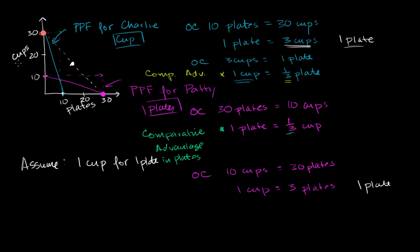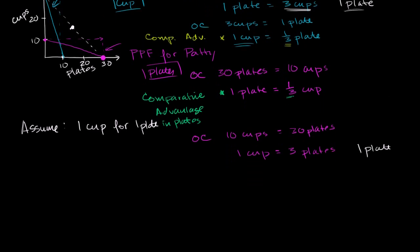In fact, we don't even know what their inputs are. It might be that Charlie doesn't have an absolute advantage — maybe he needs 100 people to produce his 30 cups while Patty can produce 10 cups with one person, so Patty would actually have the absolute advantage. To make everything clear, let's do a scenario where Charlie improved his productivity so that he has the absolute advantage in both products, and still show that as long as they have different comparative advantages, it still makes sense for them to specialize.